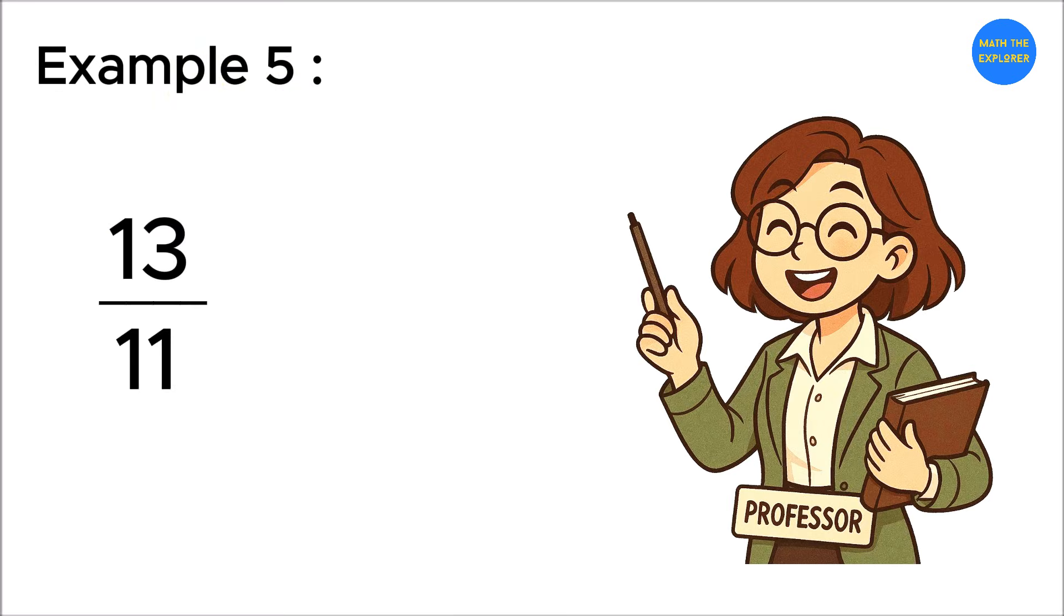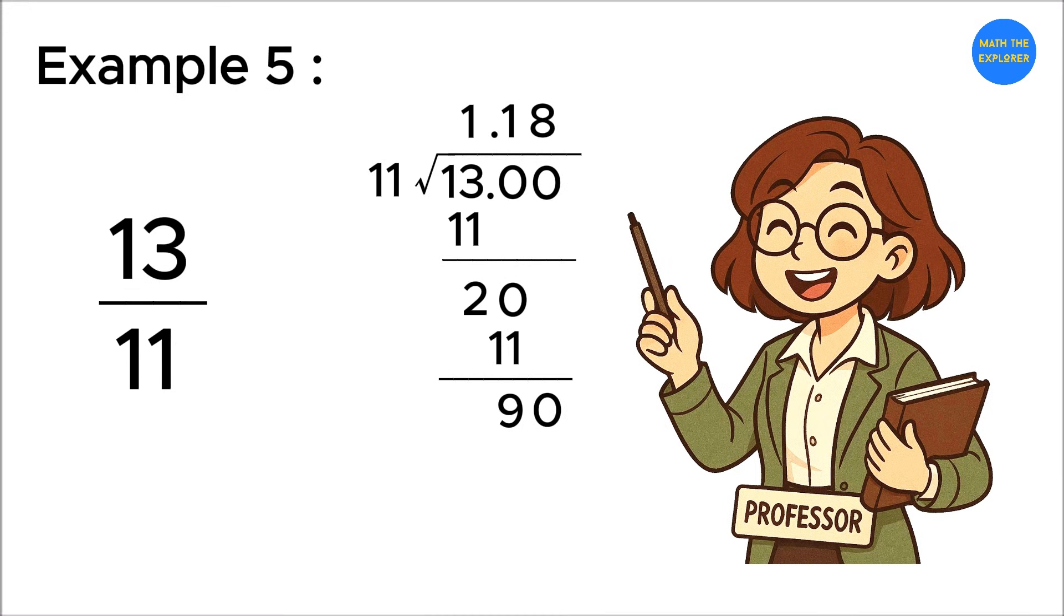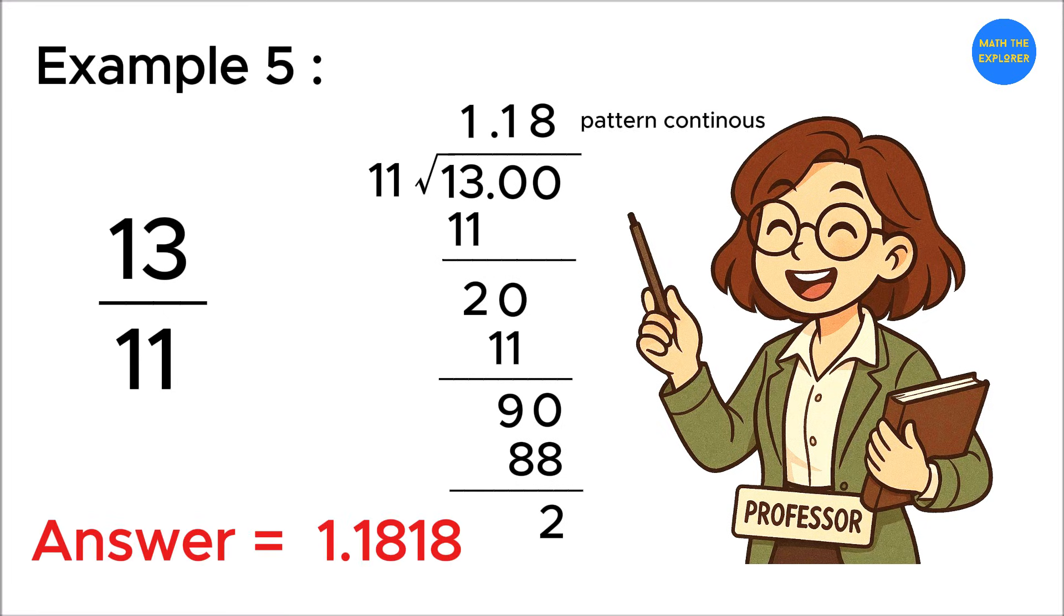Finally, thirteen over eleven. Let's divide. Eleven goes into thirteen once. Remainder is two. Add a decimal and bring down zero. Twenty divided by eleven is one. Remainder is nine. Bring down another zero. Ninety divided by eleven is eight. Remainder is two. And the pattern continues. So, thirteen over eleven is one point one eight one eight and so on. And that's it.